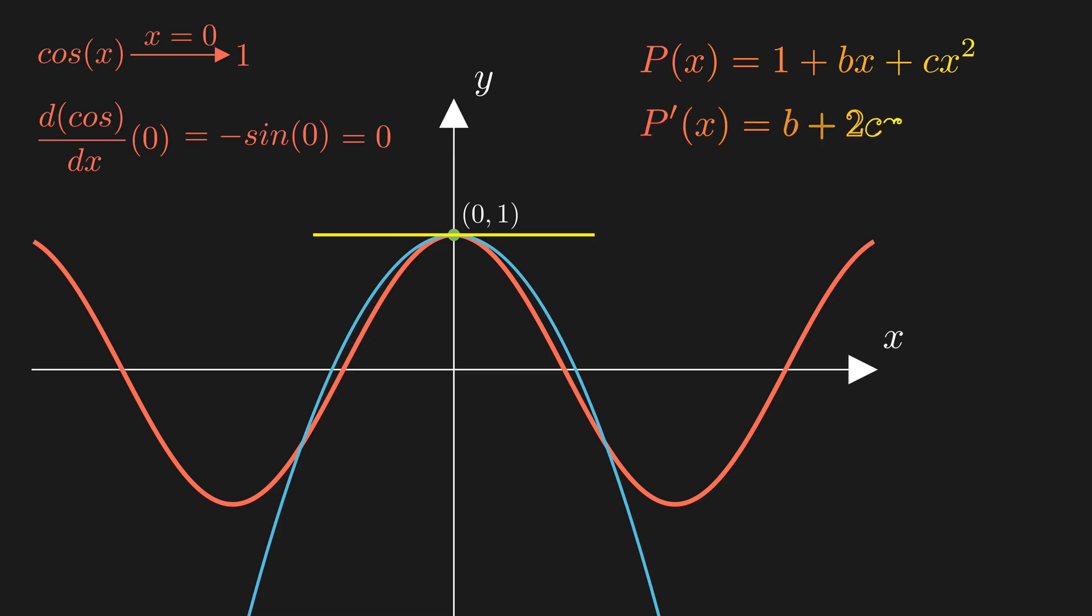The derivative of our polynomial a plus bx plus cx squared is b plus 2cx. At x equals 0, the slope is just b. That means we can make the polynomial slope any value we want by changing b. But in this case, we want it to be 0, because cosine slope there is 0. Perfect.